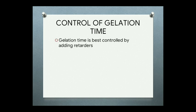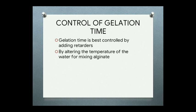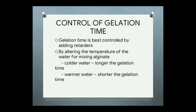Gelation time can be controlled by adding retarders, but this is in the manufacturer's control. In the clinic, the dentist can alter gelation time by changing the temperature of the water used for mixing. Adding colder water makes the gelation time longer, and adding warmer water makes it shorter. In this way we can control the gelation time.